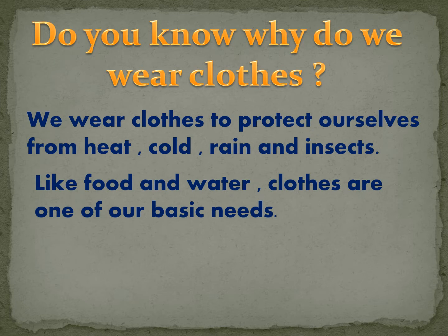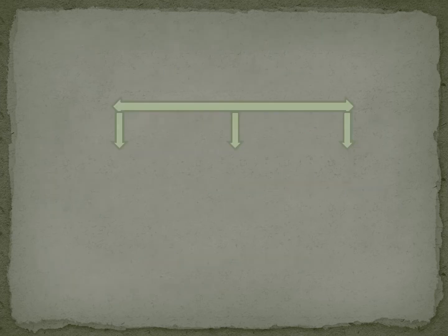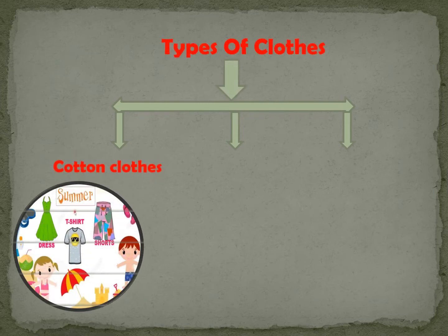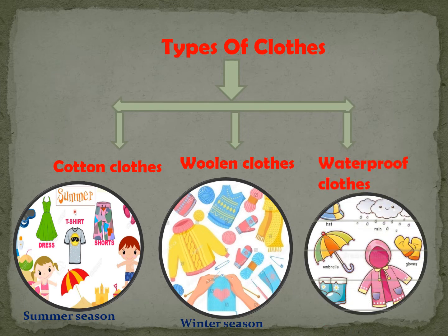Like food and water, clothes are one of our basic needs. We wear different clothes in different seasons. We wear cotton clothes in summer season, woolen clothes in winter season and waterproof clothes in rainy season.